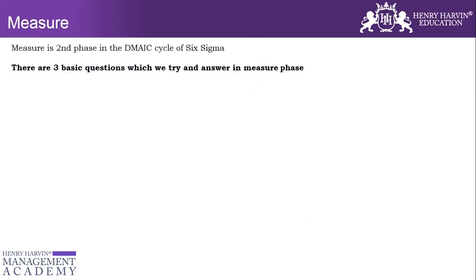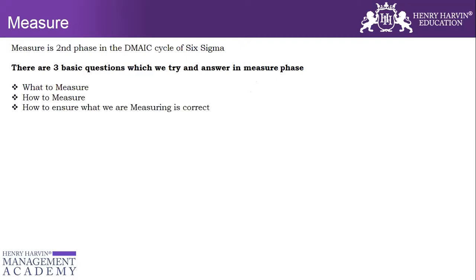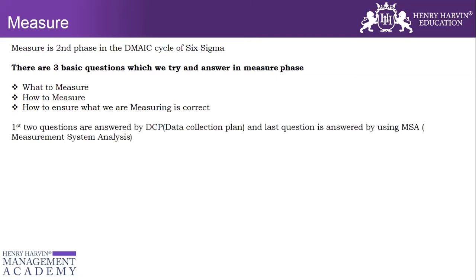There are three basic questions which we try to answer in the Measure phase: what to measure, how to measure, and how to ensure what we are measuring is correct. In the Measure phase, we really want to measure how big the problem is, what data we need to collect, how we are going to collect that data, and whether that data is good to go — ensuring it does not have any measurement error.